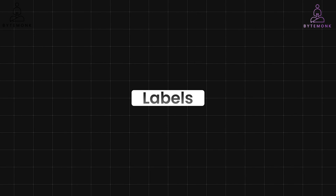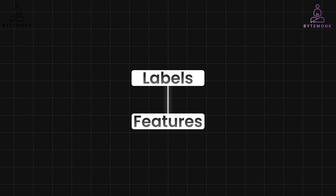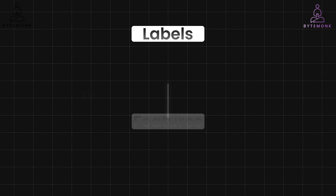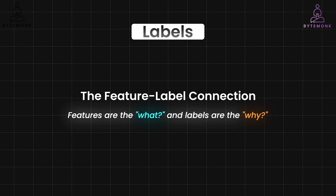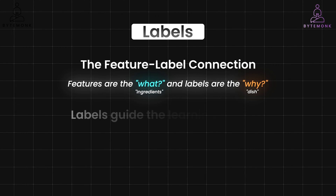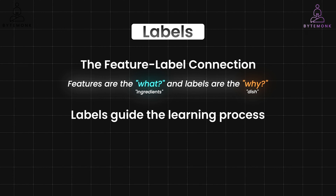We also talked about labels in the previous video. Features and labels work together to train a model to make predictions. Features are the what and labels are the why. Features describe the characteristics or properties of your data points — think of them as ingredients in a recipe. Labels, on the other hand, represent the desired outcome you want to predict; they are the dish you are trying to create with those ingredients. Labels guide the learning process, especially in supervised learning, where the model is trained on pairs of features and labels.